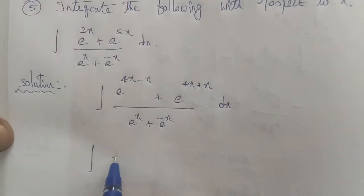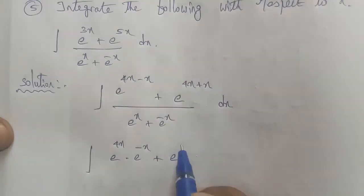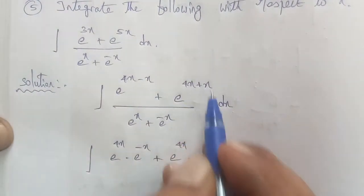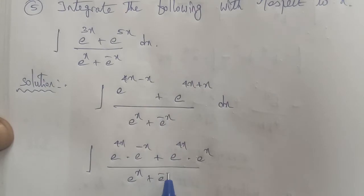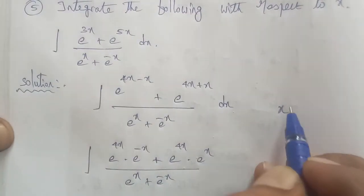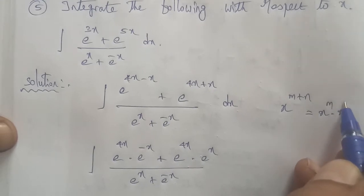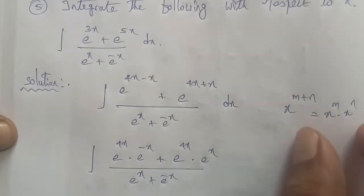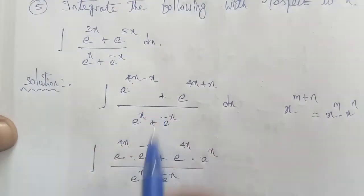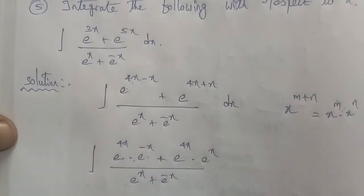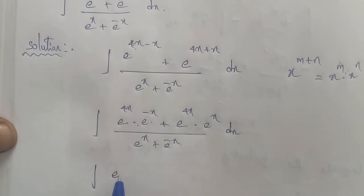So e power (4x minus x) is e power 4x into e power minus x, plus e power (4x plus x) is e power 4x into e power x, into dx. Taking e power 4x as the common term from the numerator, we get e power 4x into (e power minus x plus e power x).